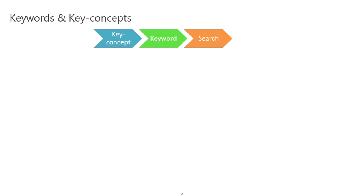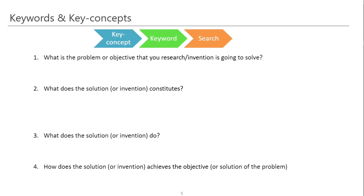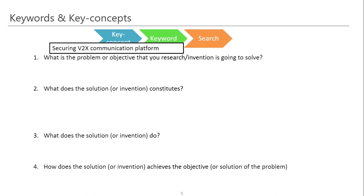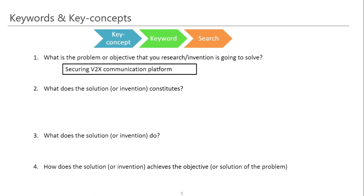For the key concept, we identify the key concept, form a keyword, then search it on a database. Let us start with the first question and take a real-life example of an invention or research problem. I am going to take a hypothetical example. I have found that one researcher is trying to build a secure V2X communication platform. I will give a brief idea about this research topic for those who do not have a background in communication.